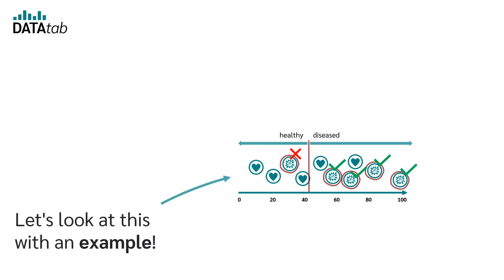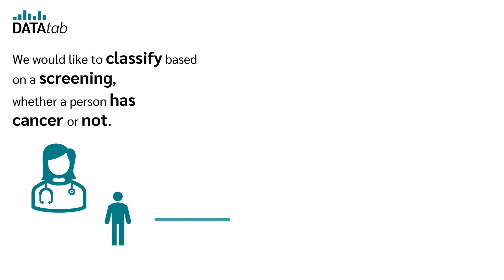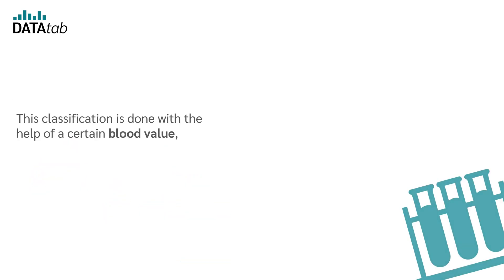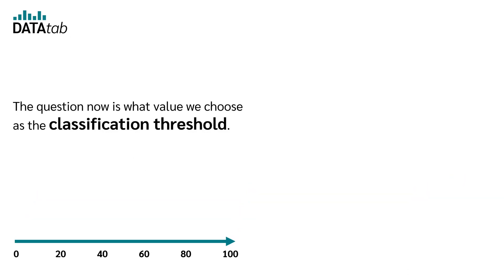Let's look at this with an example. We would like to classify, based on a screening, whether a person has cancer or not. This classification is done with the help of a certain blood value, where high values indicate cancer. The question now is what value we choose as the classification threshold.